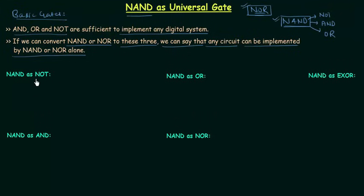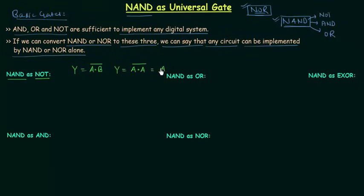First I will implement the NOT gate using NAND gate. Let's take a two-input NAND gate. The output Y is equal to (A·B)'. If we have two similar inputs, then the output Y is equal to (A·A)'. This is the first input and this is the second input. A·A is equal to A, so finally we have A'. So if we provide the same inputs to the NAND gate it will work as a NOT gate.